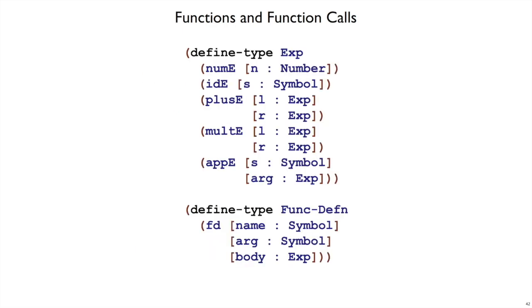So that leads us to these defined types. Defined type exp has nume, plus e, and multi as before, but also now has ide for identifier or variable references, and it has api for applications or function calls, with a symbol representing the function name, and an expression representing the argument expression.